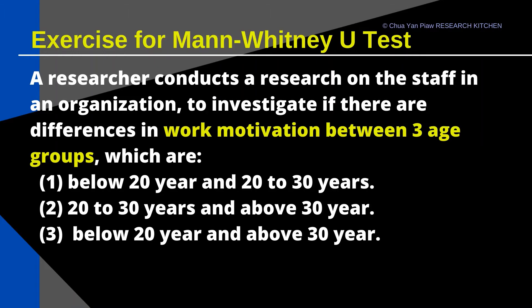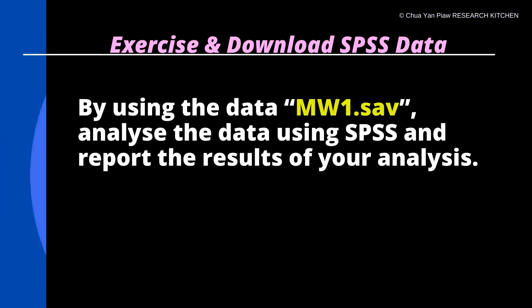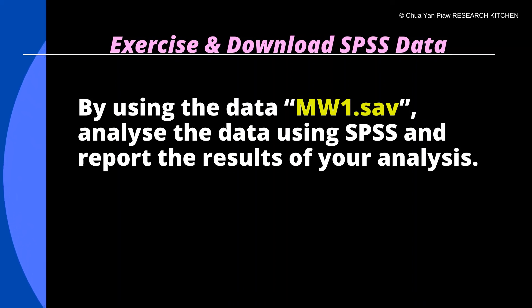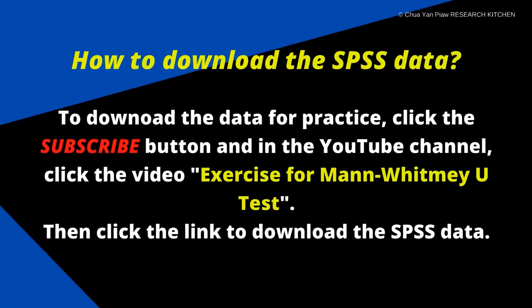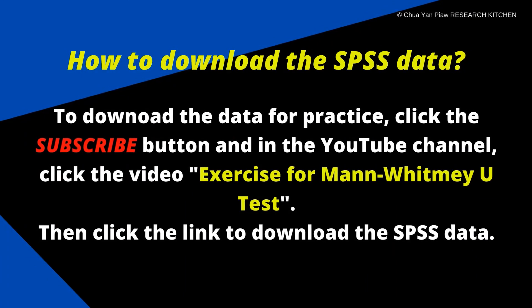After learning the Mann-Whitney U-test, let's practice your SPSS data analysis skill with an exercise. A researcher conducts a study on staff in an organization to investigate if there are differences in work motivation between three age groups: below 20 years and 20 to 30 years, 20 to 30 years and above 30 years, and below 20 years and above 30 years. Using the data MW1-SAB, analyze the data in SPSS and report the results. To download the data, click the subscribe button on the YouTube channel, then click the video exercise for Mann-Whitney U-test and click the link to download the SPSS data.